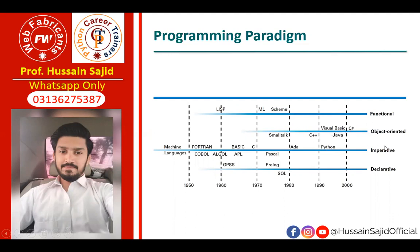When Python came, it was imperative — it emerged around 1990. So the imperative paradigm includes machine language from the 1950s, then in the 1960s: BASIC, APL, C, Pascal, Ada, Python — all imperative languages mentioned at different points in time. For declarative, there was GPS in 1960, then Prolog and SQL in the 60s–70s.